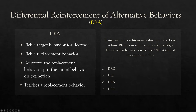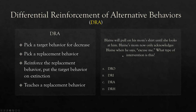Blaine will pull on his mom's shirt until she looks at him. Blaine's mom now only acknowledges Blaine when he says 'excuse me.' What type of intervention is this? What is Blaine's mom doing? She's putting pulling on her shirt on extinction. She's acknowledging 'excuse me' — teaching a replacement behavior. Because we're teaching a replacement behavior, it has to be DRI or DRA. So we ask: are they compatible? Can you pull on mom's shirt and say 'excuse me'? Yes. Therefore, we know it's DRA.